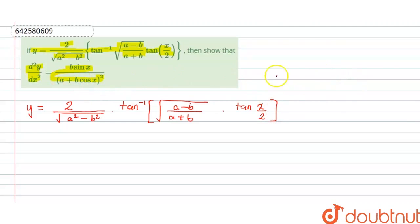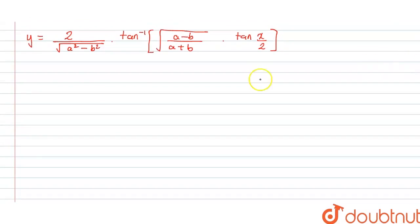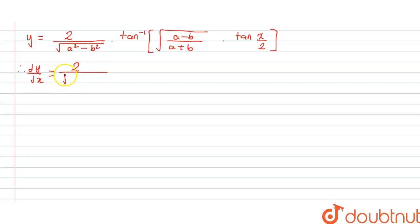Now we need to find d²y/dx². So first we will find dy/dx. We will differentiate this, and therefore dy/dx is equal to — this is a constant, so it will remain as 2 upon square root of a minus b into square root of a plus b. I will write the reason for this later.